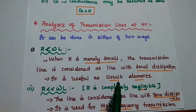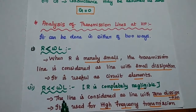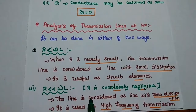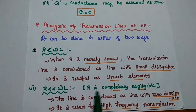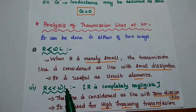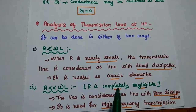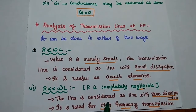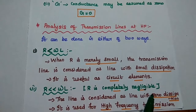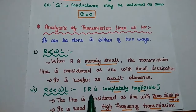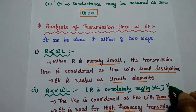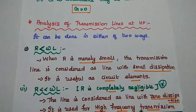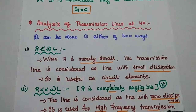It is useful as a current element in the circuit analysis. The second condition is very important — we are going to use this condition in transmission line systems. Here, R is far less than omega L, so R is completely negligible. In this stage, the line is considered as the line with zero dissipation. This is a very important condition; it is widely used for high frequency transmission analysis with maximum power.